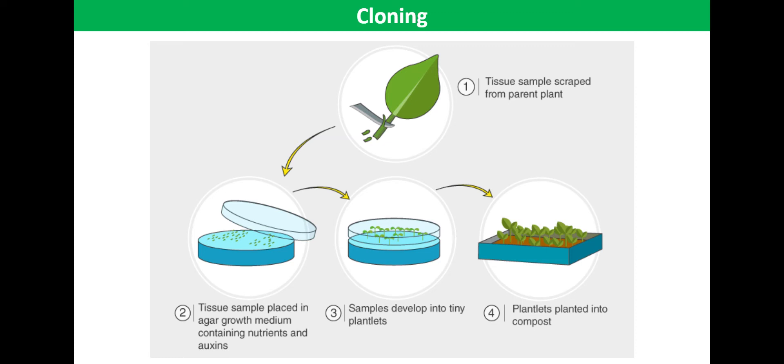Micro-propagation involves taking a small piece of plant tissue which is known as the explant, and using plant growth substances to encourage it to grow and develop into a whole new plant.